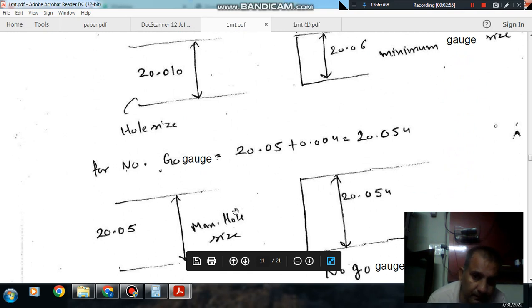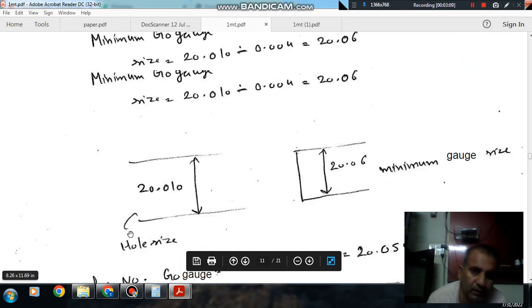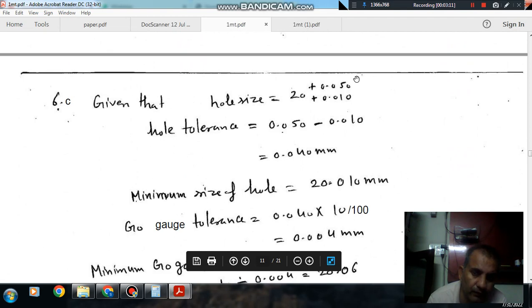Now we have to design a gauge which cannot pass through this hole. So its size should be higher than this maximum size of hole. Maximum size of hole is 20.05.